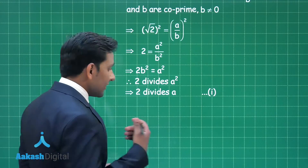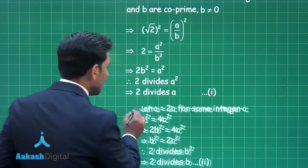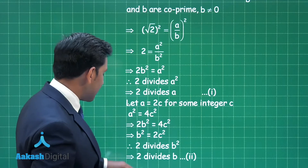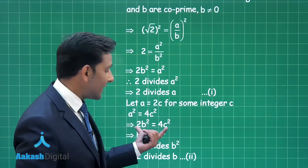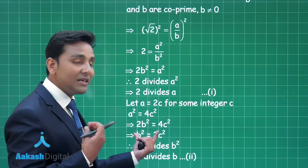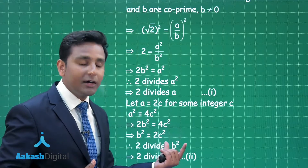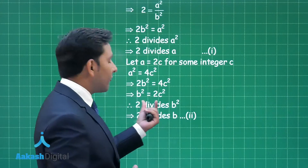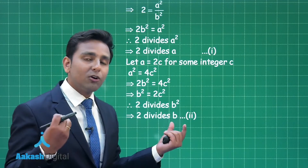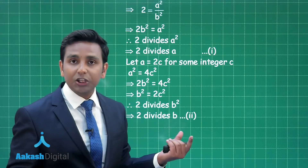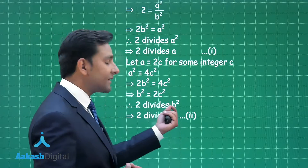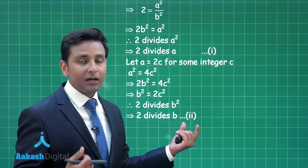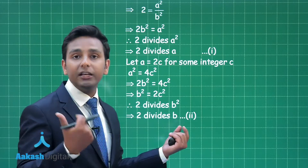Since a is an even number, we consider a = 2c where c is some integer. When we further simplify this step by squaring both sides, we obtain the relation b² = 2c². From this relation you can conclude that 2 divides b². Again, using the concept based on the Fundamental Theorem of Arithmetic, if 2 divides b² then 2 will definitely divide b, meaning b is also an even number.